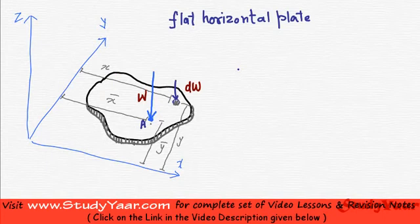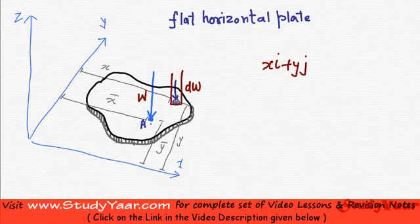So what is the moment due to all such small elements? Let us first find out the moment due to this small element. The moment due to this small element is going to be, this is x. If you take the position vector to this point, this is going to be what? This is going to be xi plus yj. Into this weight vector, this weight vector is going like this.